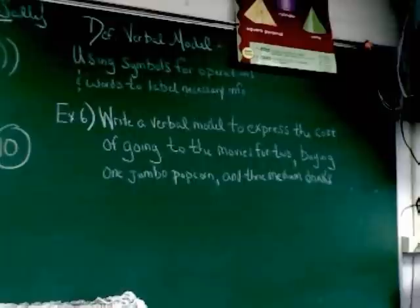Symbols for operations and words to label necessary information. In a verbal model, you're not actually going to solve anything. Even if you could, you're not going to. In a verbal model, all you're doing is writing out in words the way you're going to solve the problem. Again, a verbal model using symbols for operations and words to label necessary information.